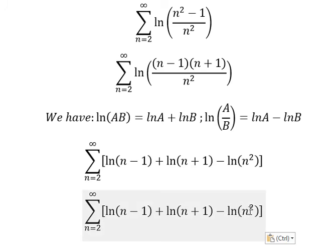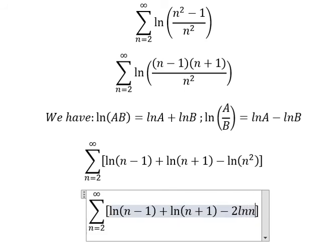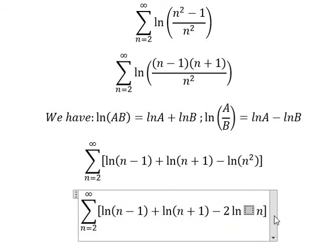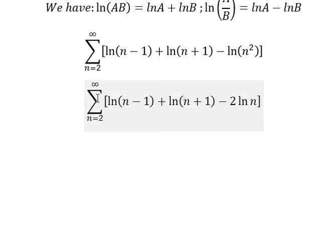And this one we can pull the 2 outside the natural log, so we have 2 ln n. Next we have three series here that should be like this.